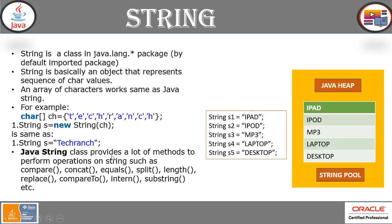Now let's look at strings in Java. String is a class in the java.lang package, which is a default imported package. A string is basically an object that represents a sequence of character values — an array of characters. You can define a string as `new String(...)` passing an argument to a constructor, or simply declare a variable of type String with a value in double quotes. The String class provides many methods such as compare, concat, equals, split, length, replace, compareTo, intern, substring and more. Since string is a big topic, we'll have a separate session on string handling in Java soon.